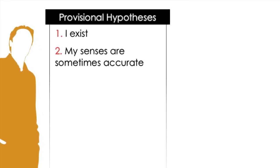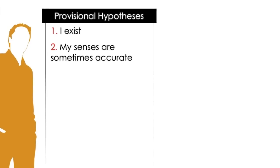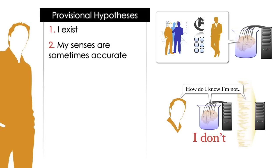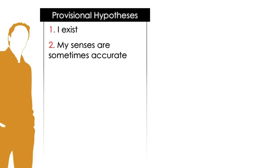To begin my epistemological journey, I made two provisional assumptions: I exist, and my senses are sometimes accurate. These provisional assumptions might be wrong. They're just hypotheses. But if I don't assume them, I have nowhere to go epistemologically.